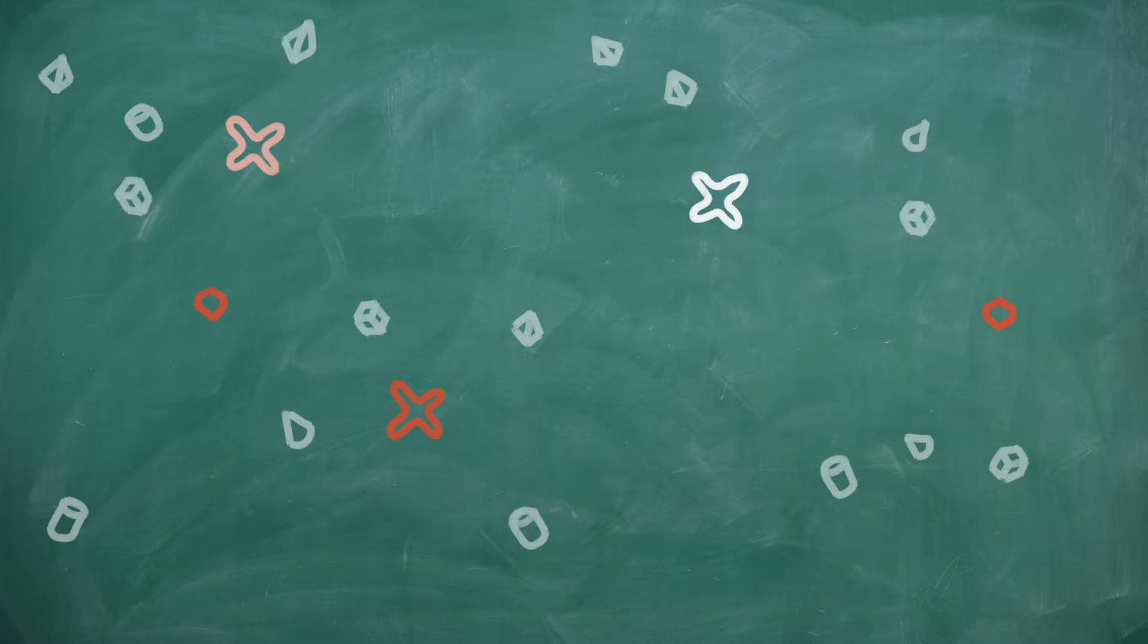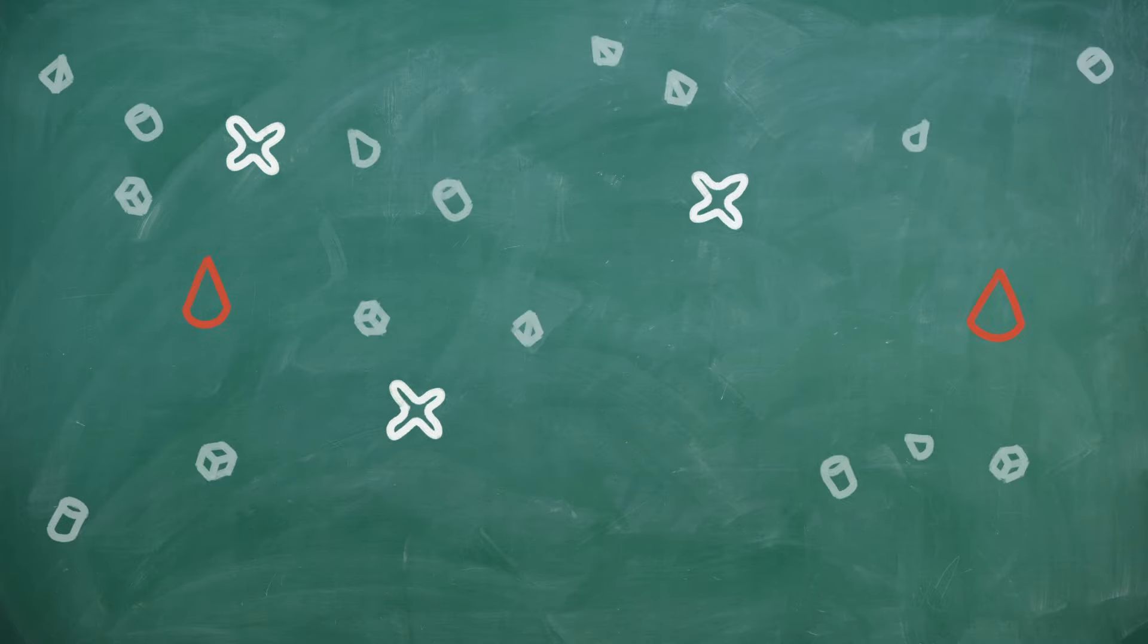In a quantum state, particles can even achieve something we call superposition, where they exist in multiple states simultaneously.